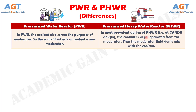Difference number 1. In a pressurized water reactor, the coolant also serves the purpose of moderator — the same fluid acts as coolant-cum-moderator. Whereas, in the most prevalent design of pressurized heavy water reactor, the coolant is kept separated from the moderator. Thus the moderator fluid does not mix with the coolant.